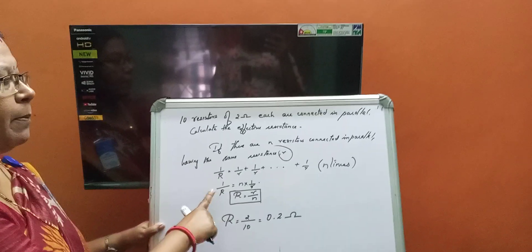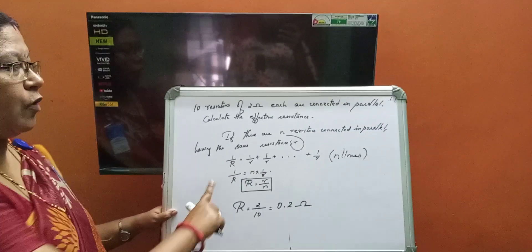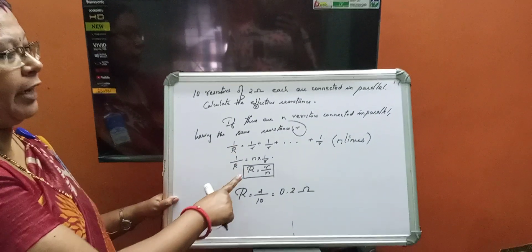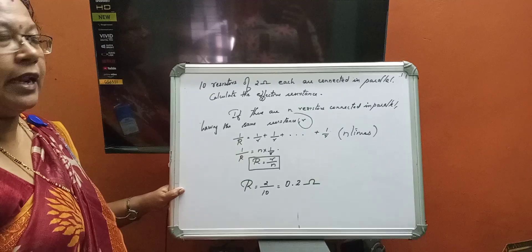Instead of adding this n times, you can multiply 1 by R is equal to n into 1 by small r. So, what is the resistance you can reciprocate it? Capital R is equal to small r by n.